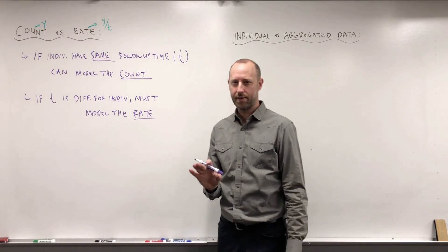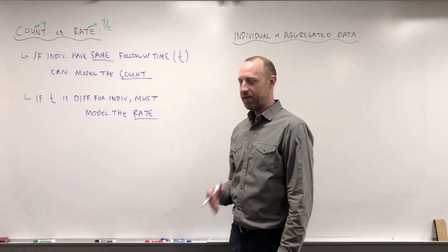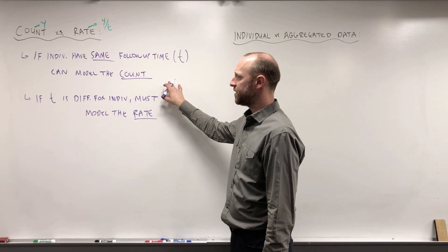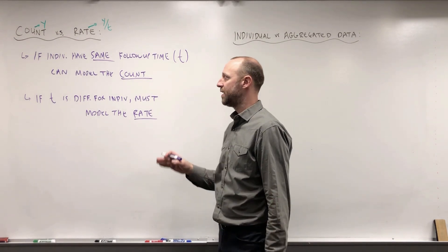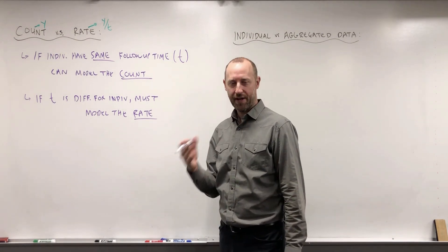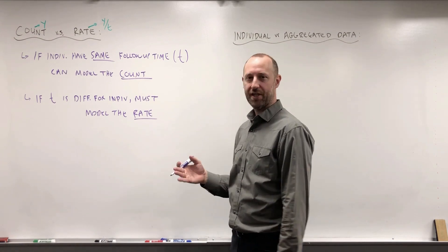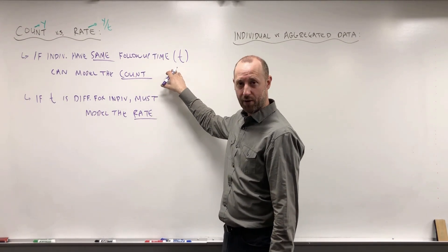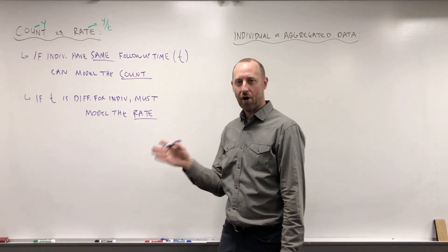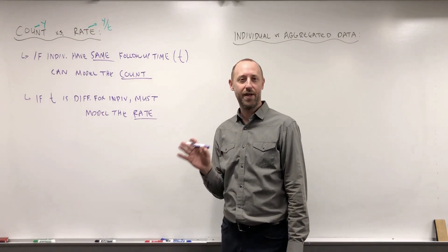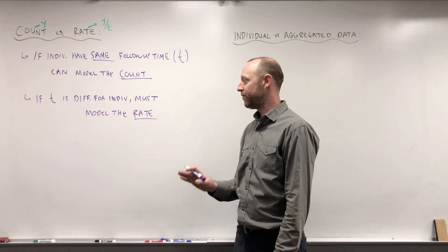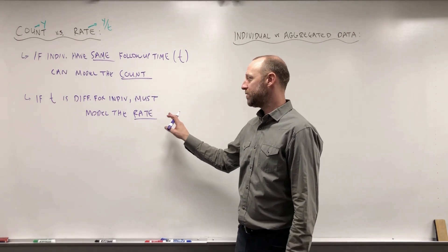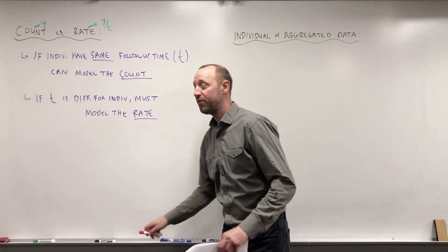One of the data sets we're going to look at has an outcome variable of the number of times people visit a physician in a year. Now everyone has been followed for exactly one year, so for all the individuals we can compare the number of visits, because they were each followed for one year. But suppose that we had followed people for different amounts of time.